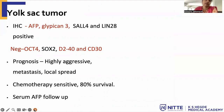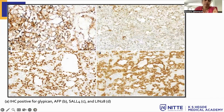On immunohistochemistry, yolk sac tumors are AFP positive and GPC3 (Glypican-3) positive. SALL4 and LIN28 can also be positive, but they are negative for OCT4, which is a marker for dysgerminoma, and negative for CD30, which is a marker for embryonal carcinoma. Prognosis is poor as it is a highly aggressive tumor, but with chemotherapy the survival rate is 80%. They can metastasize or present with local spread. Follow-up after treatment can be done using serum AFP level. IHC images show positivity for GPC3 (specific marker for yolk sac tumor), AFP focal positivity, SALL4 nuclear positivity, and LIN28 cytoplasmic positivity.